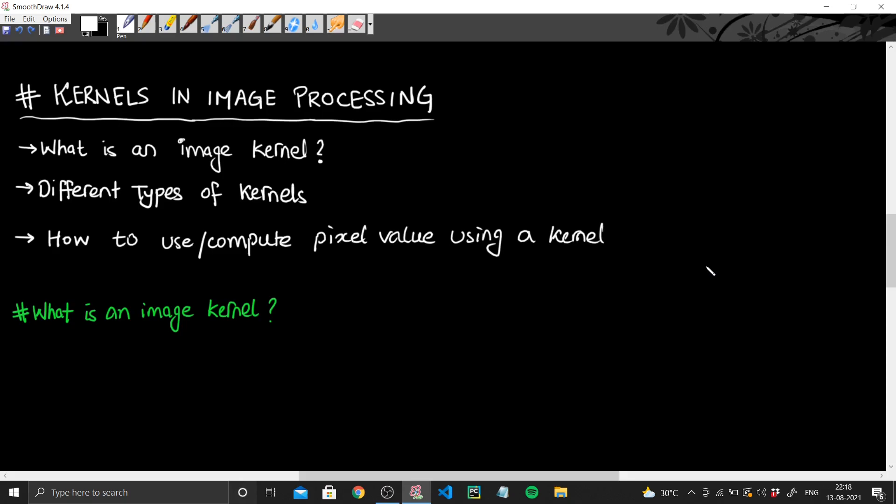So we'll be looking at three different questions. The first one is what exactly is an image kernel. The second one is the different types of kernels available, and the third is how do we use a kernel to compute the pixel value using a kernel.